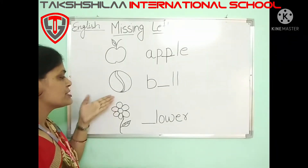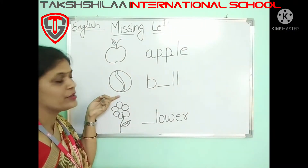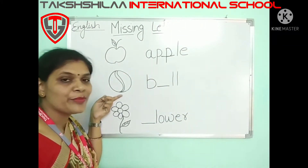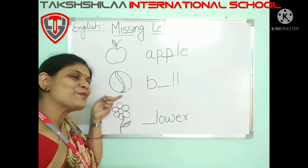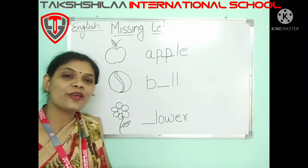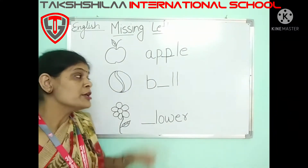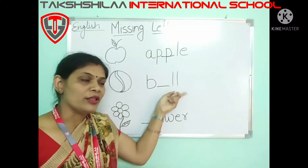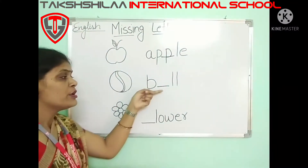Move to second one. The second picture is B for ball. And what is the spelling of ball? B, A, double L — ball.